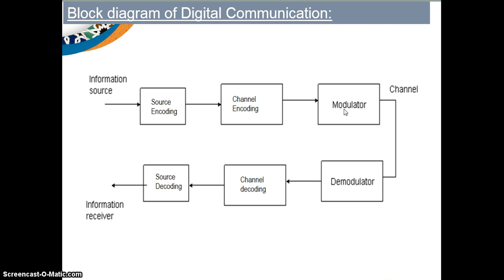We need to convert the low-frequency signal to a high-frequency signal by mixing the message signal with a carrier signal. This is done in such a way that any of the properties — amplitude, frequency, or phase — of the carrier changes in accordance with the amplitude of the message signal. In digital communication we study different types of digital modulation techniques, which include ASK, FSK, and PSK. We also study analog pulse modulation and different types of digital pulse modulations in Unit 1.